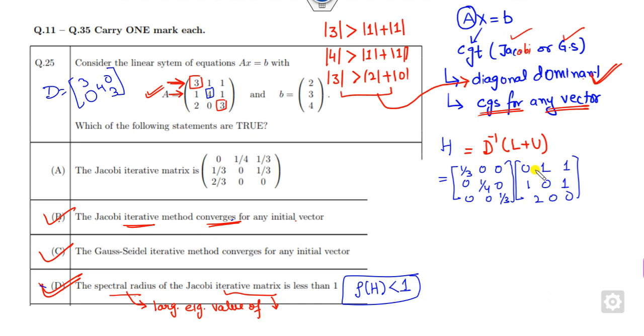When you multiply them, look at the second element - the first element is 0, this element is 1/3. You can see here it is 1/4, but the iterative matrix should be 1/3. This means option A is wrong. So the correct answers are B, C, and D.